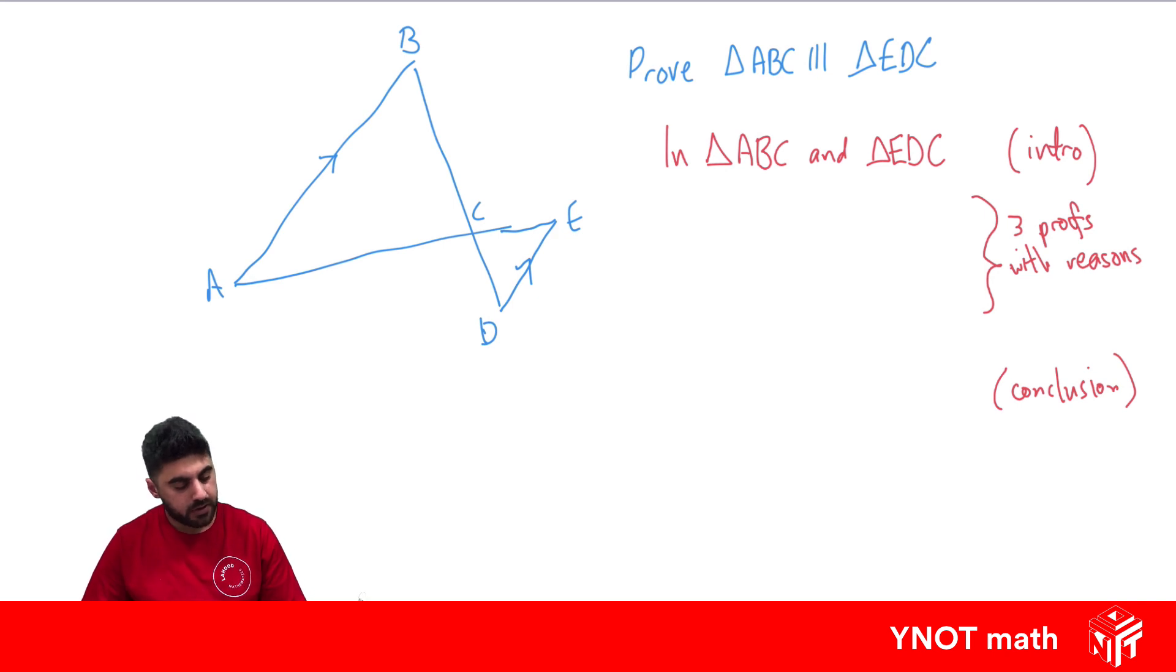Let's work on some proofs. The first thing we can do is that we know that these two angles are equal because we have two lines that cross over. So we're going to have vertically opposite angles that are equal. We can say angle ACB equals angle ECD, because vertically opposite angles are equal.